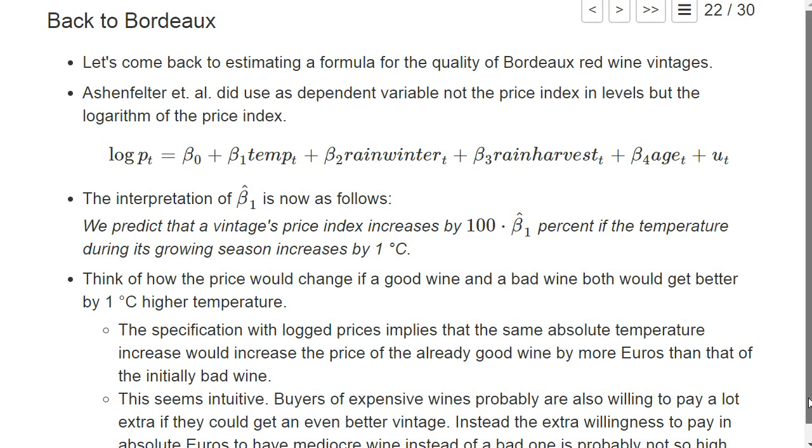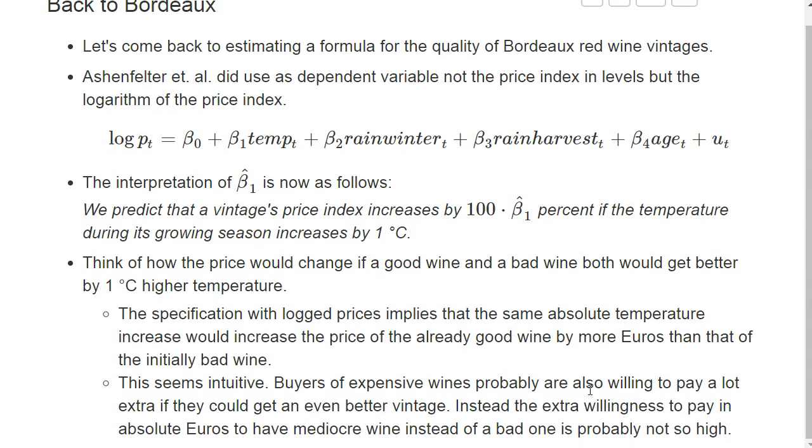But this kind of seems intuitive, right? You think that buyers of expensive wines probably are also willing to pay a lot extra if they get even a slightly better vintage. I mean, if you really want to have a good wine and you can afford a good wine, then you're also willing to pay in absolute terms probably more to have the good wine a bit better than having a bad wine a bit better. And this is what you capture, this idea, if you take the logarithm of the price index. And this kind of seems intuitive.